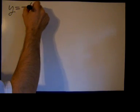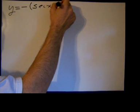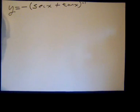Morning. We're going to take a derivative using the chain rule. The function is y equals negative bracket secant x plus tangent x close bracket raised to the power of negative one.